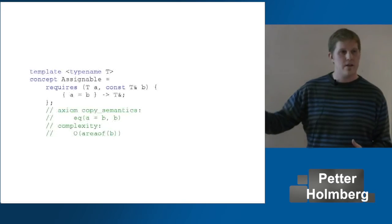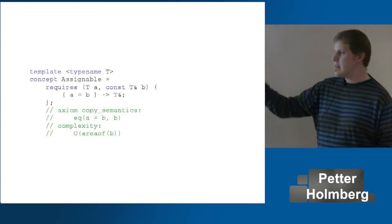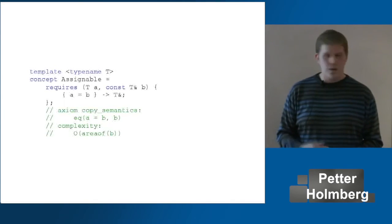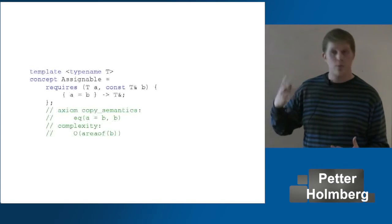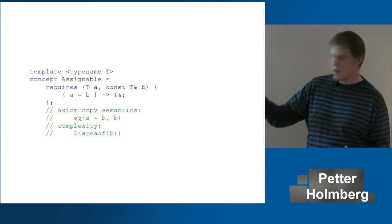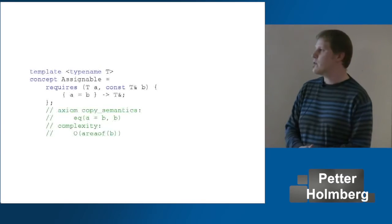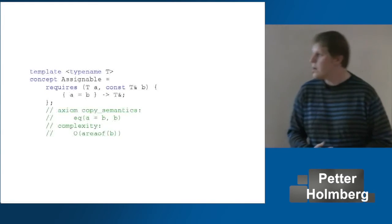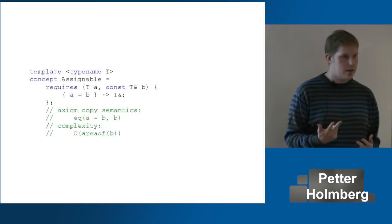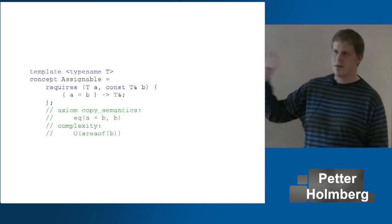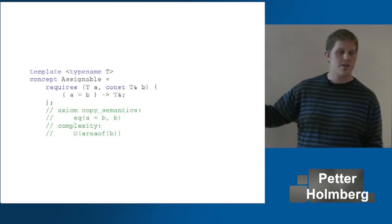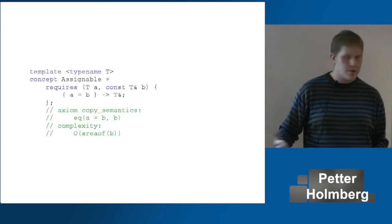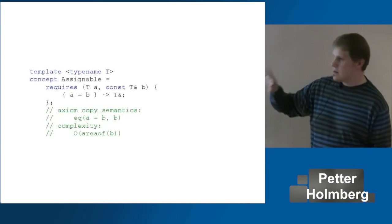When the compiler checks this, it looks for a copy assignment operator — if it finds one, the whole expression becomes true and the type satisfies the concept. But remember I mentioned three kinds of requirements — this is purely syntactic, and that is actually all that C++ concepts will help us with today. But there are also important semantics here, so I put these as comments.